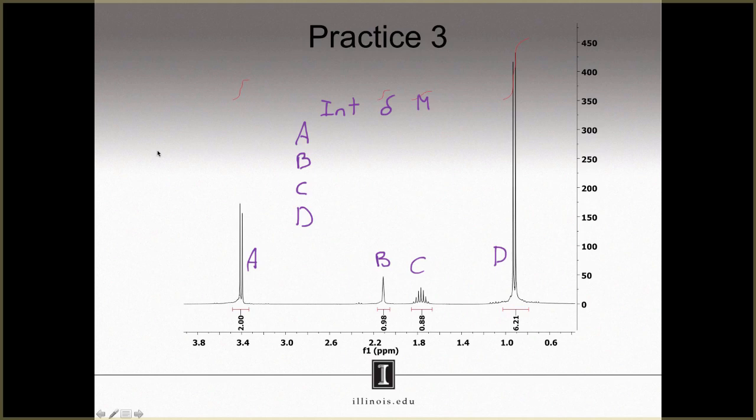Okay, let's see how you did. To find the integration of A, I look at this number below the signal. This has a value of 2, so A's integration is 2. I continue down the line, filling in the values. If I don't have an integer, I simply round to the nearest whole number. And there we go, I filled in the first column of my table.